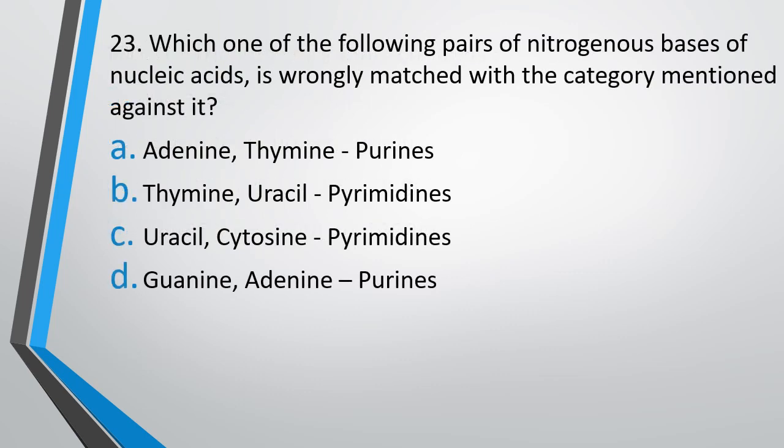Question number 23. Which one of the following pairs of nitrogenous bases of nucleic acid is wrongly matched with the category mentioned? Options: adenine and thymine as purine; thymine and uracil as pyrimidine; uracil and cytosine as pyrimidine; or guanine and adenine as purine. The correct answer is option A — adenine and thymine listed as purine is wrongly matched, because thymine is a pyrimidine whereas adenine is a purine.